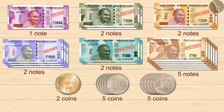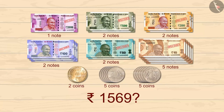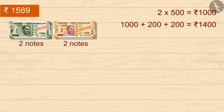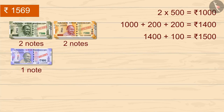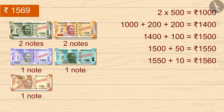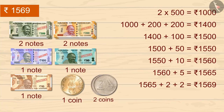Grandpa shows his notes and coins and asks Gudi to make 1569 from them. Gudi works it out: 2 notes of 500 makes 1000; 2 notes of 200 makes 400, totalling 1400; 1 note of 100 makes 1500; 1 note of 50 makes 1550; 1 note of 10 makes 1560; 1 coin of 5 makes 1565; and 2 coins of 2 rupees makes 1569.